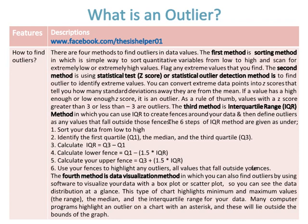If a value has a high enough or low enough Z-score, it is an outlier. As a rule of thumb, values with a Z-score greater than 3 or less than minus 3 are considered outliers.